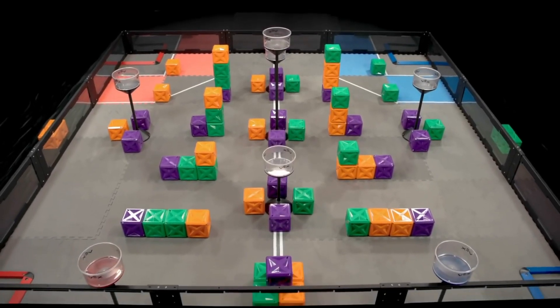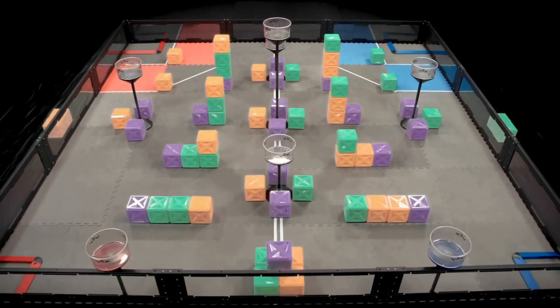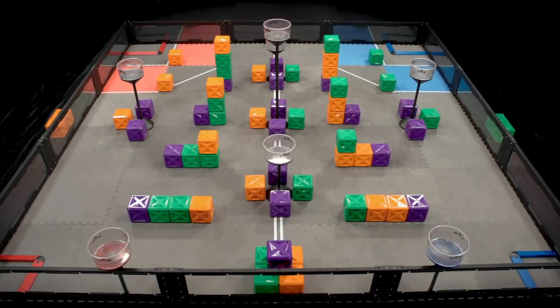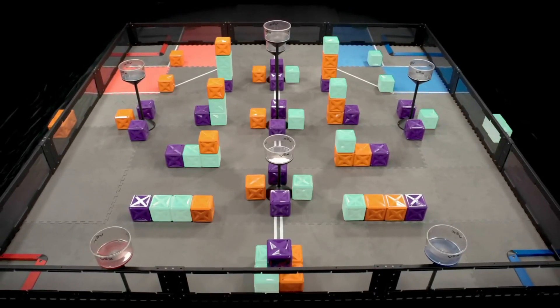The VRC Tower Takeover field contains 66 cubes. There are 22 of each color: orange, green, and purple.